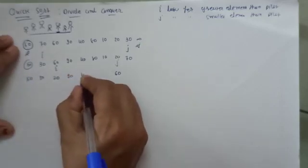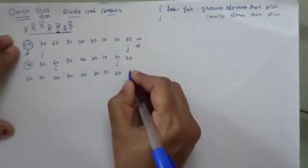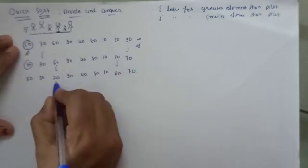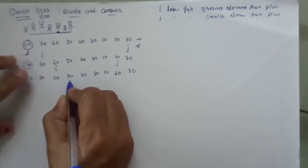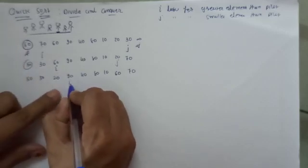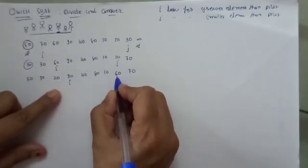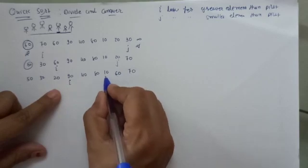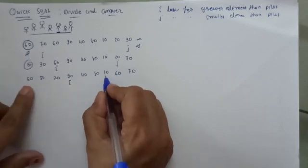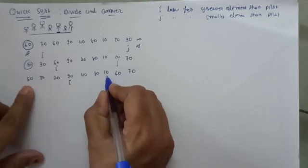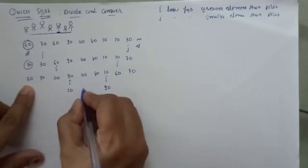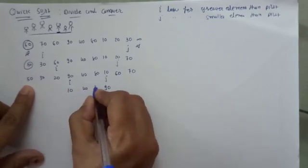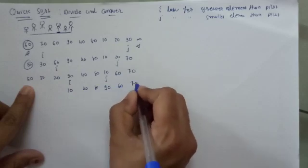The other elements remain as they are. We increment i again; i looks for a greater element. 90 is greater than 50, so i stops here. j was at its earlier position — 10 is smaller than 50, so j stops here. We exchange 10 and 90; the other elements remain as they are.